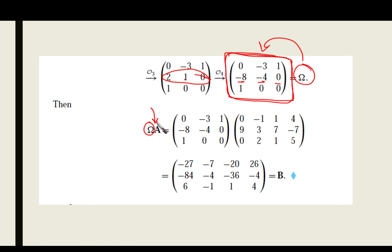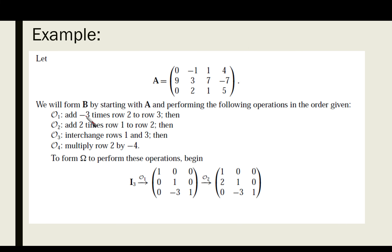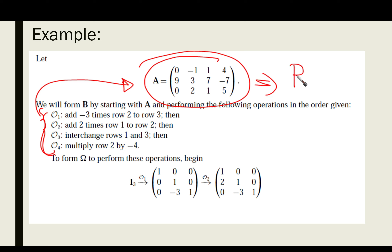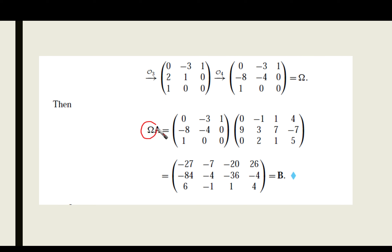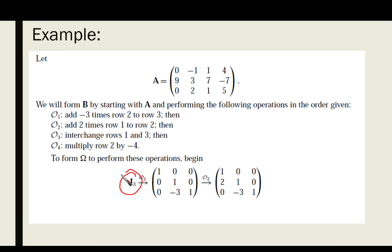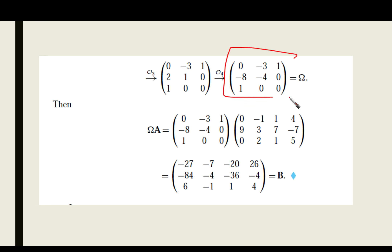Multiplying Ω by the original matrix A gives matrix B — the same result as if we had performed all four operations directly on A. This confirms that the elementary matrix approach works: we can obtain the elementary matrix Ω by starting from the identity matrix and applying all operations, then multiply Ω by the original A.